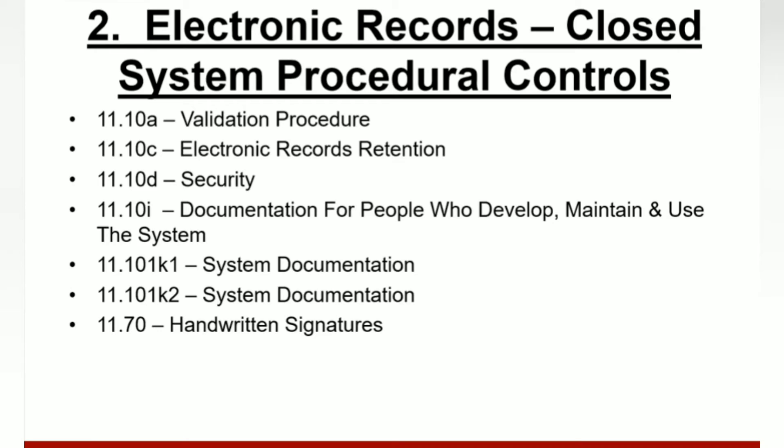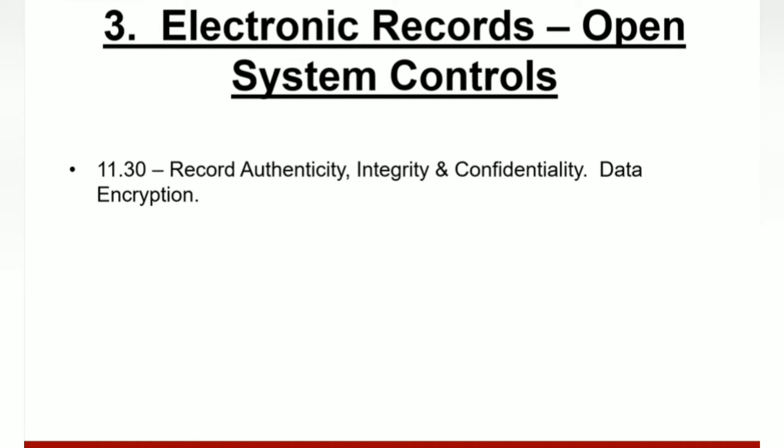For 11.70, if handwritten signatures are executed to electronic records and the electronic record has changed, the signer must be prompted to re-sign via manual procedures. That completes sections one and two for electronic records for a closed system. For an open system, you complete sections one and two and also section three. For section three, 11.30 requires that electronic records have appropriate controls, that controls must ensure record authenticity, integrity, and confidentiality is maintained, and that data must be encrypted.